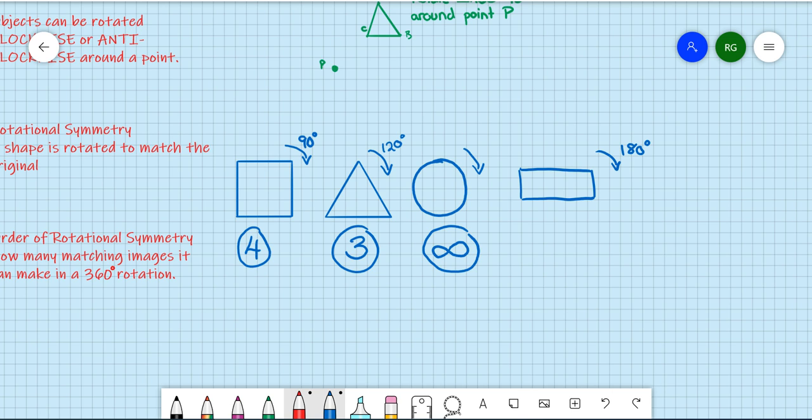If I try and turn that just 90 degrees, it's going to appear to be that shape, which is not a matching image of the original. So its order of rotational symmetry is two.